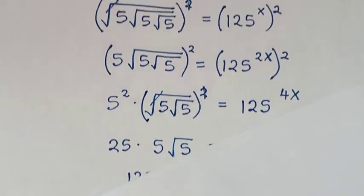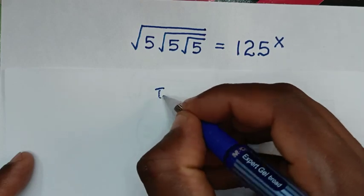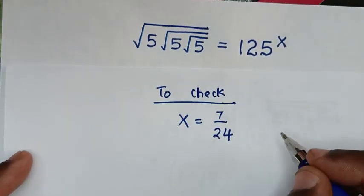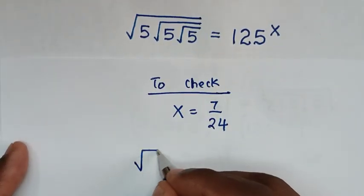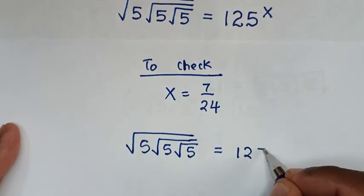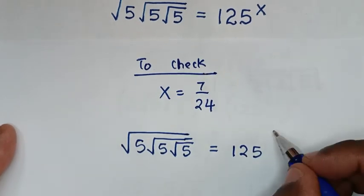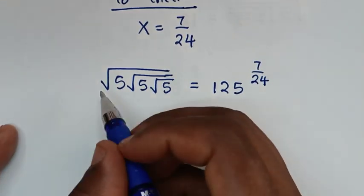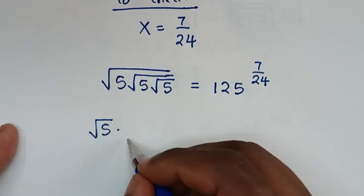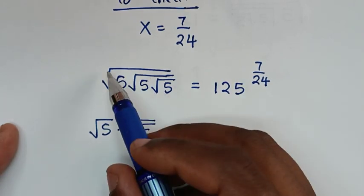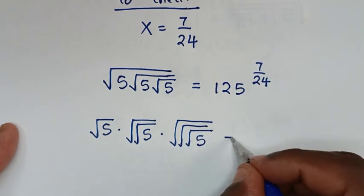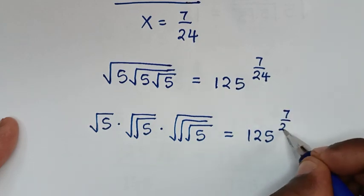Now we check if this answer is correct. Going back to our original problem with x = 7/24, we substitute into 125^(7/24). The left side expands as: square root of 5, times square root of square root of 5, times square root of square root of square root of 5, equal to 125^(7/24).